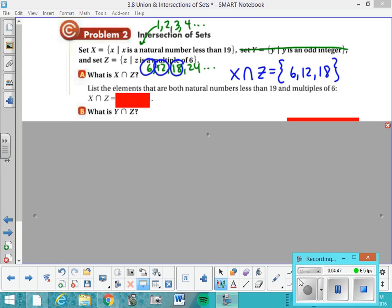Let's consider the next one. What does Y intersect with Z? So I'm going to go back and ignore set X for now. Set Y intersected with set Z. Well, set Y are odd integers. Integers are negative numbers, too. So we're going to have to say if we were to roster this out, we'd say dot dot dot, negative 3, negative 1, 1, 3, 5, dot dot dot.